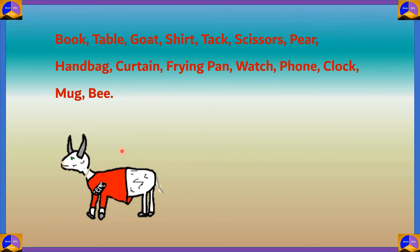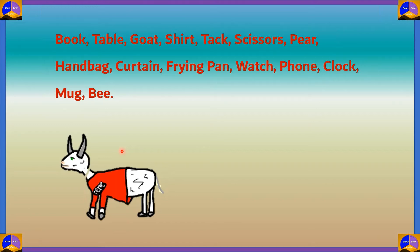For connecting shirt to tack, imagine you're wearing a shirt and suddenly feel pain all over your body — you find out the shirt is made out of tacks and they're hurting you. These are just samples; you can create other images that connect shirt and tack. For tack and scissors, an illogical image would be using scissors to pin something to a whiteboard instead of a tack — using a scissor to pin something on the board.